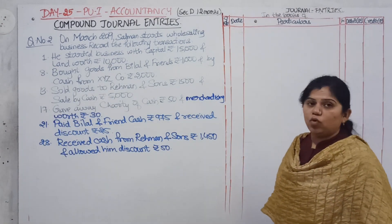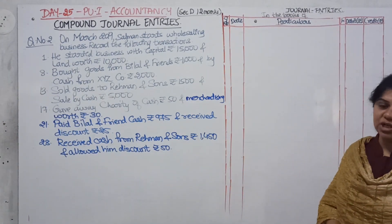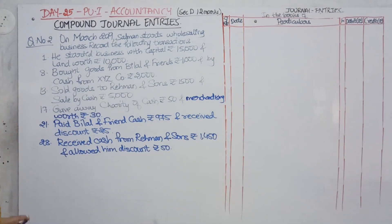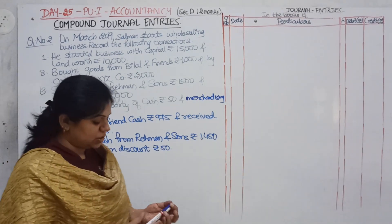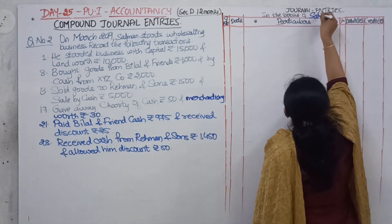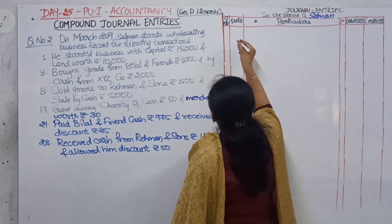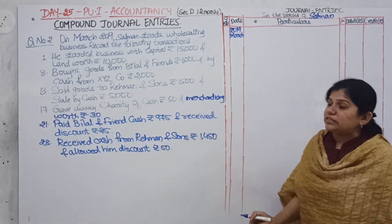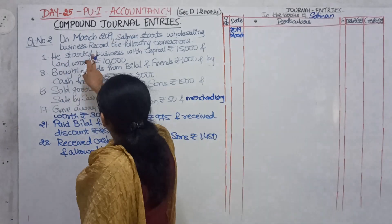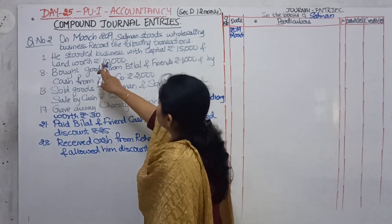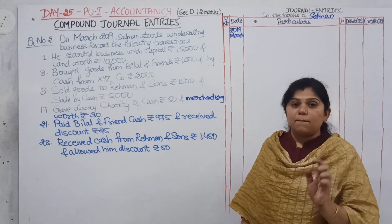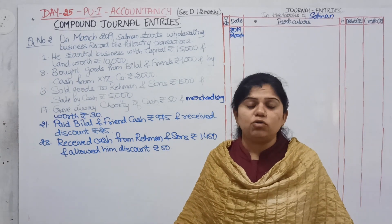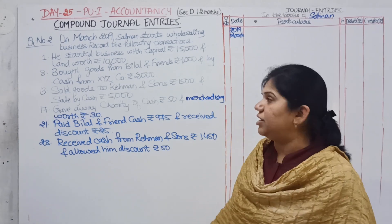We shall take one more question in this class itself. We have taken one more question related to compound journal entries. What it says: On March 2019, Salman starts a wholesaling business and records the following transactions. So these are the books of Salman, and the transactions are taking place in March 2019. Compound journal entries are coming here as well.